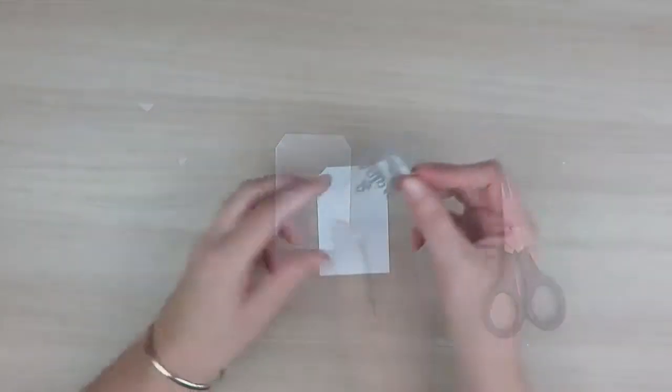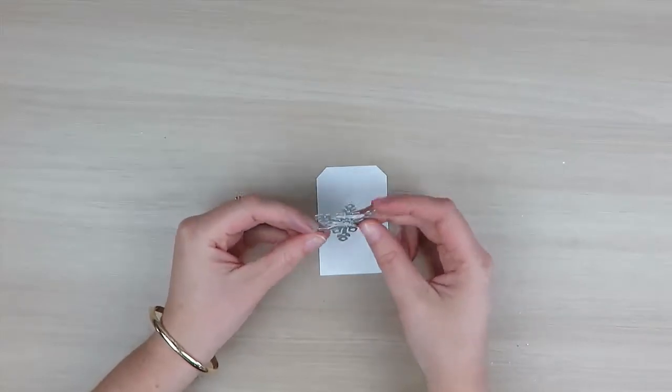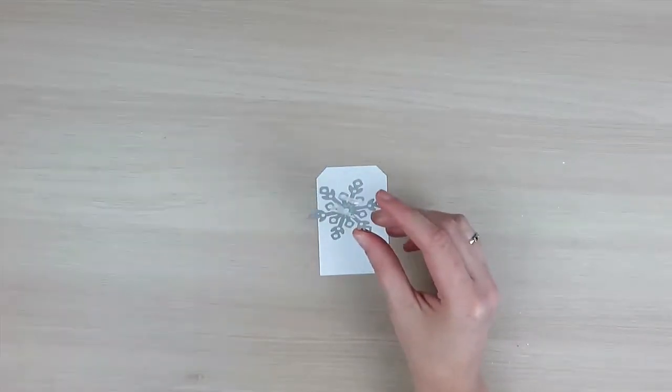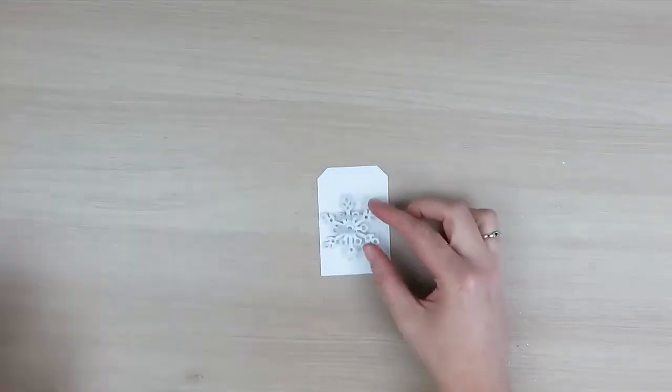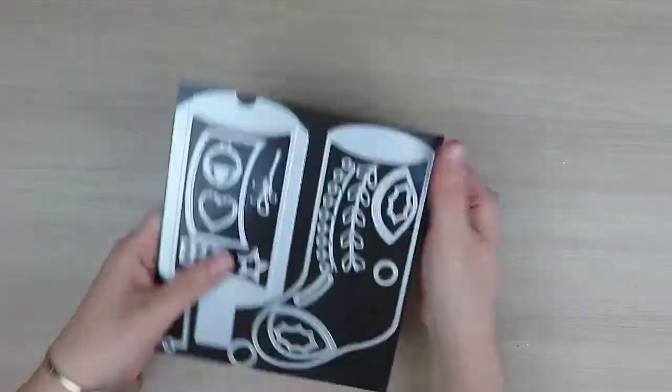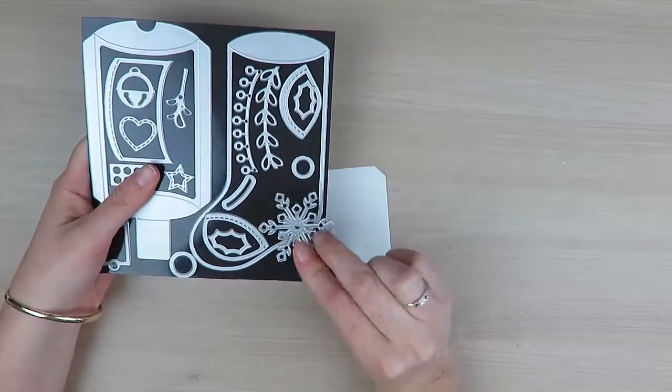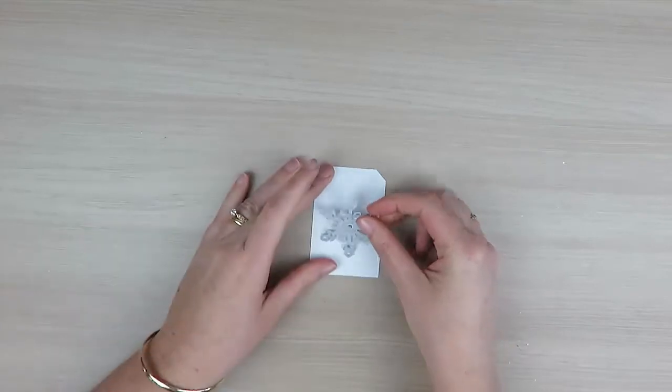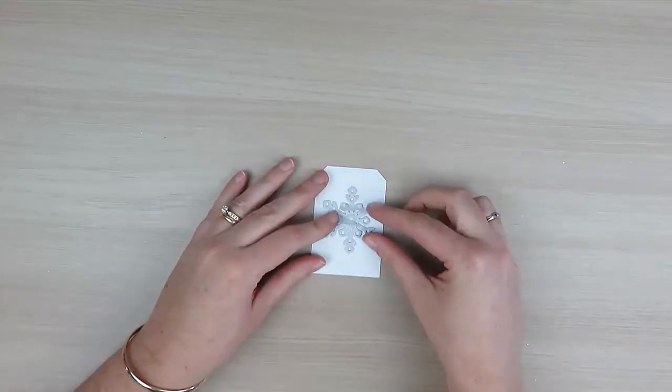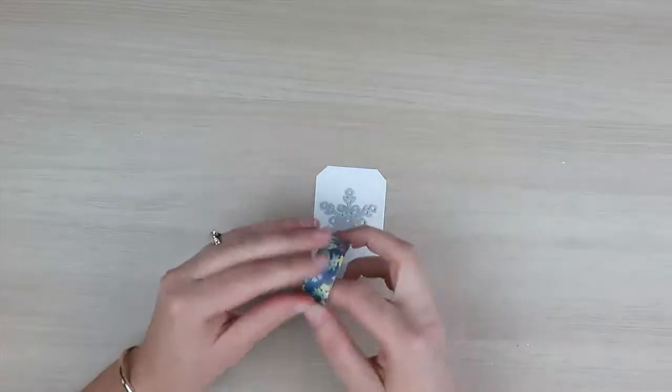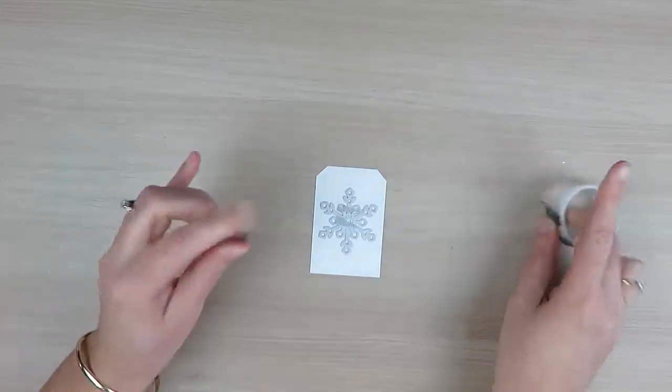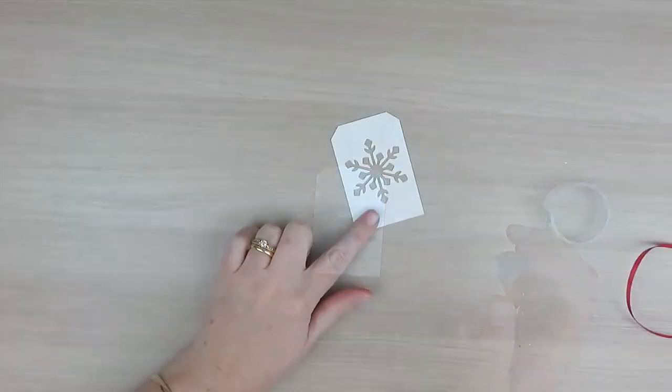I have the snowflake die here that comes from Trimming Your Stocking framelit dies. I've used the large snowflake die and I'm going to center this, hold it down with some washi tape, and run that through my Big Shot machine. Now that I've cut that out, this is what it looks like.